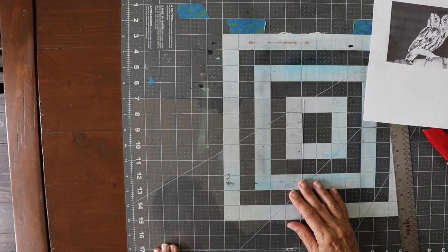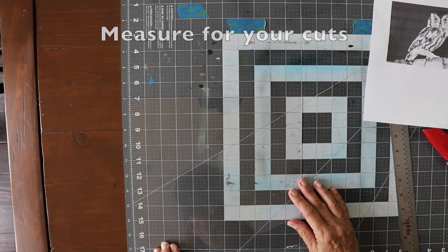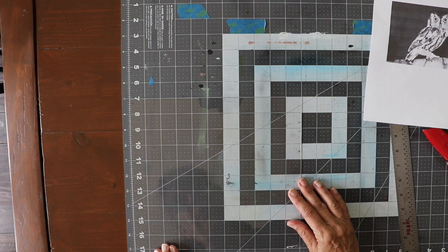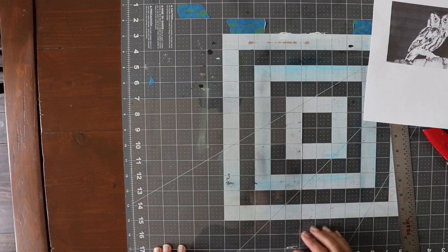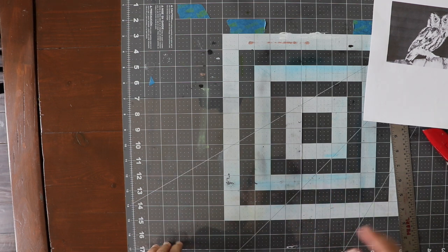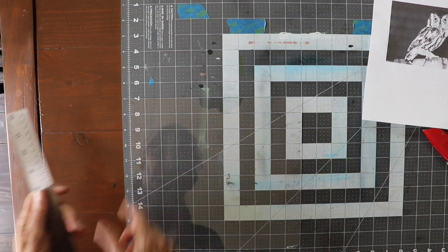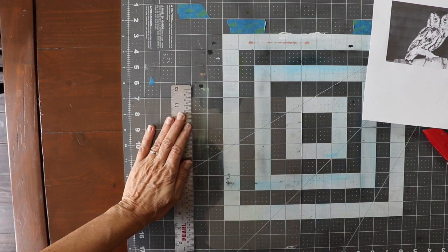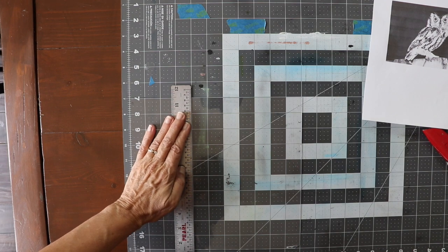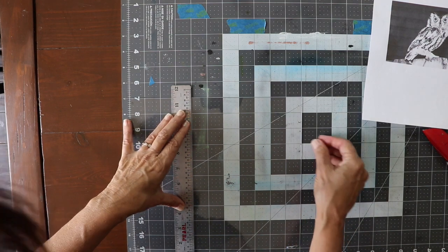I'm going to use the grid on my cutting board to measure for the cut. I'm going to cut it four by four, so let's see, four inches, one, two, three, four, make sure it's good and straight.